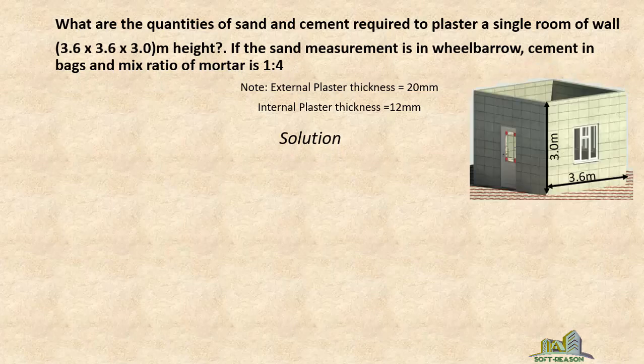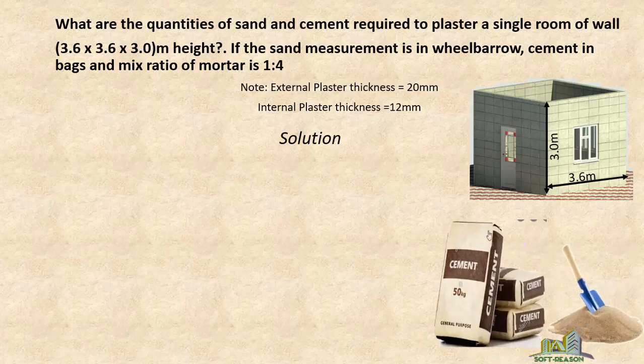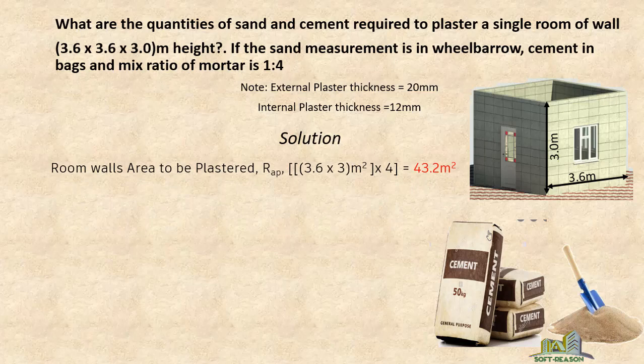We will consider this as the reference room size, which is 3.6 by 3 meters. We'll go straight into the calculation. The total room wall area to be plastered consists of 3.6 (length) multiplied by 3 (height), then multiplied by 4, because we have 4 walls, which gives us 43.2 square meters.